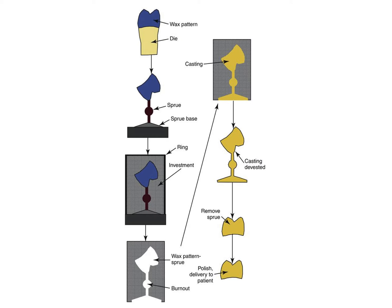Everything on the summary slide is color coded: blue for wax, purple-black for the sprue wax, gray for the investment, white for the void in the investment, and gold for the gold metal. It's a great picture to study to help summarize everything. There are some dimensional changes through all these steps — some shrinkage and expansion — but they sort of even each other out, and it's very minimal, especially for a gold crown.